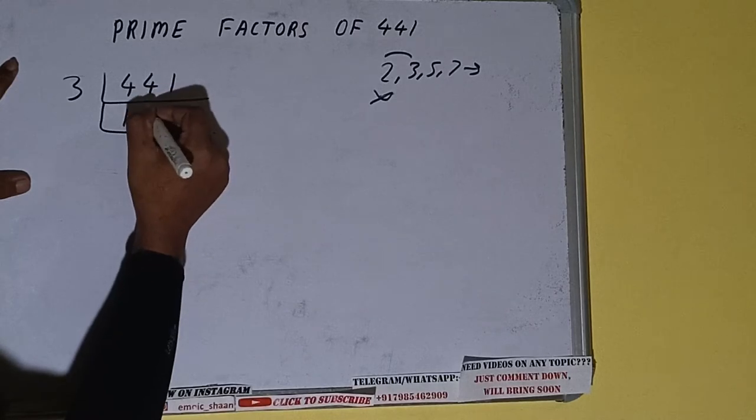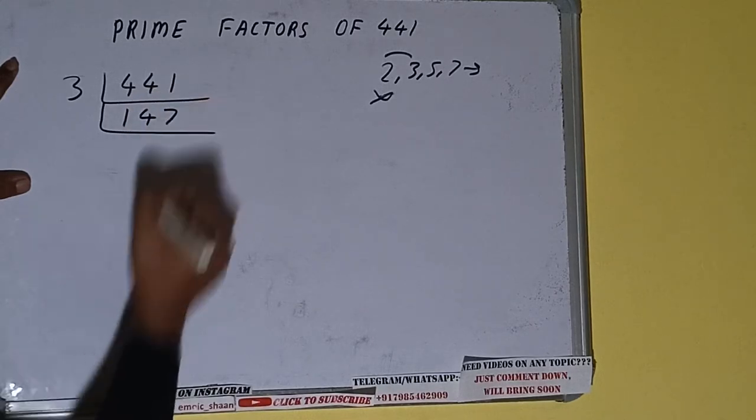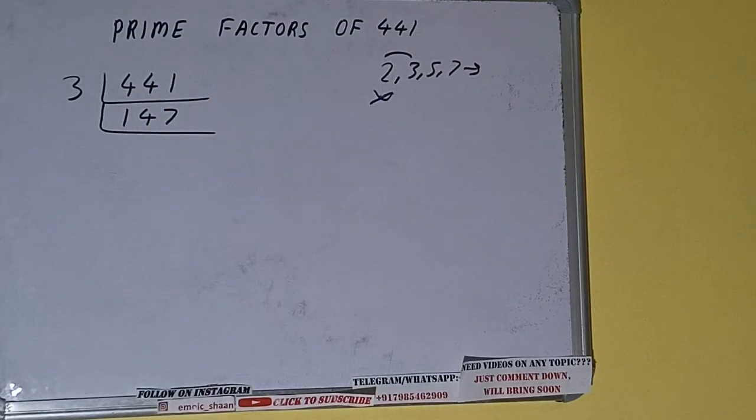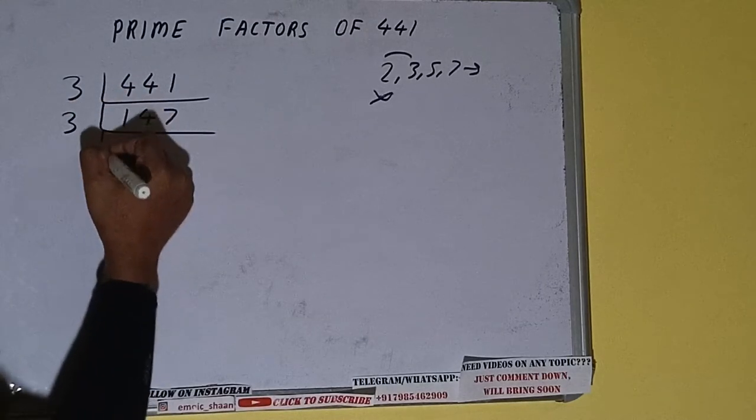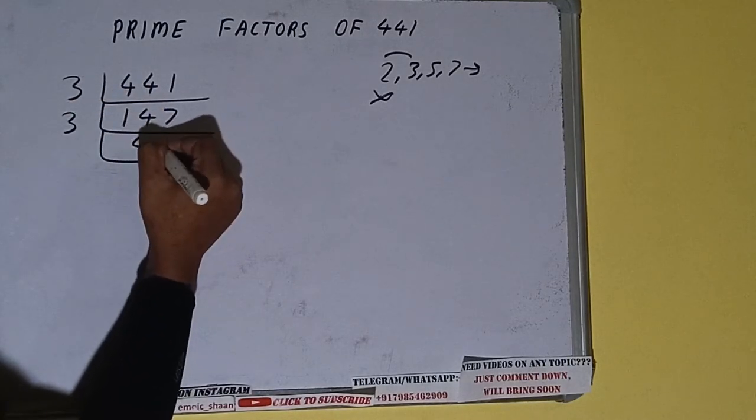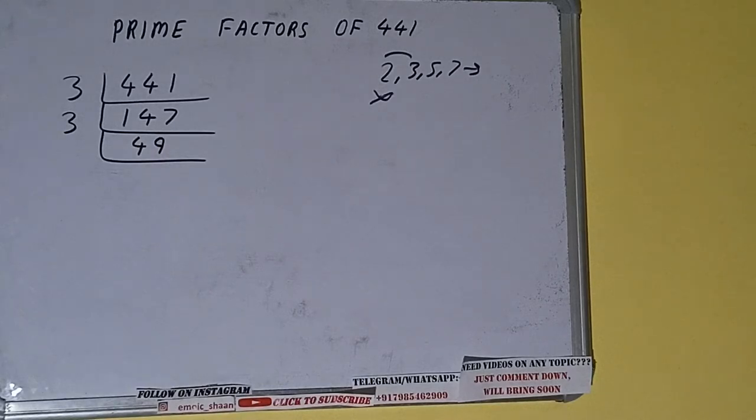Now is this 147 divisible by 3 again? Let's see. 3 fours are 12, 2, 7. Yes, it is divisible by 3, so divide it and we'll be having 49.